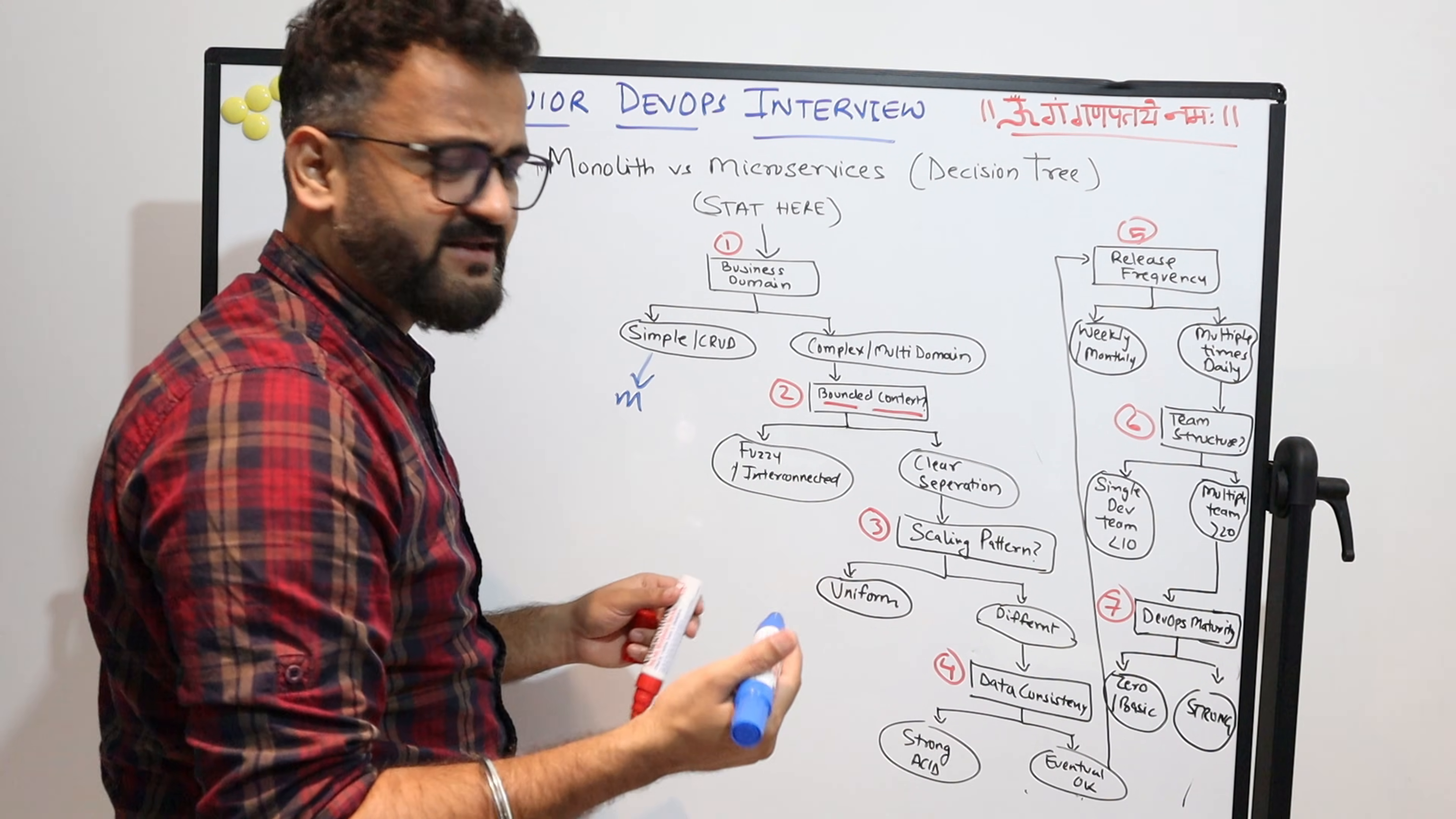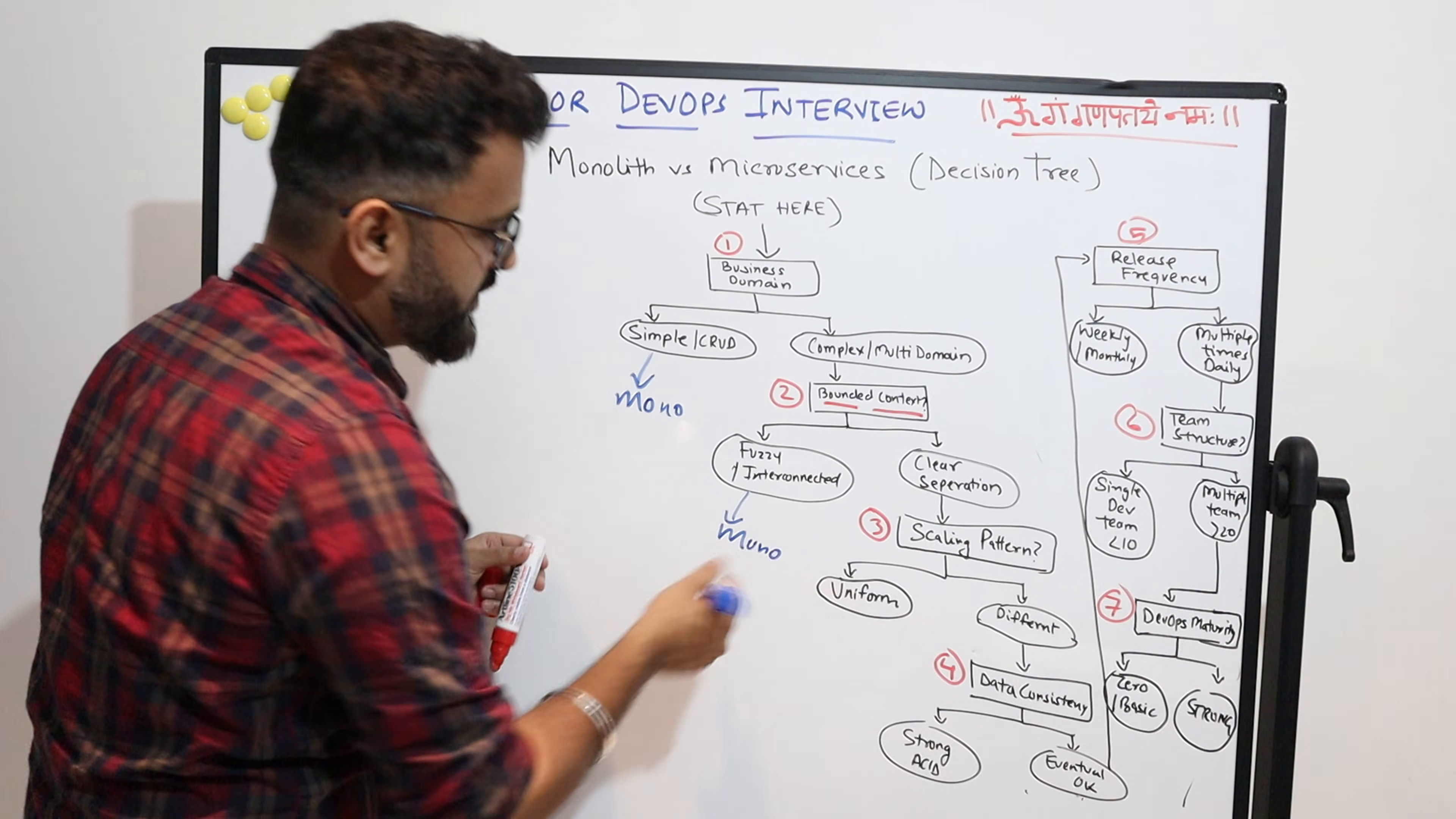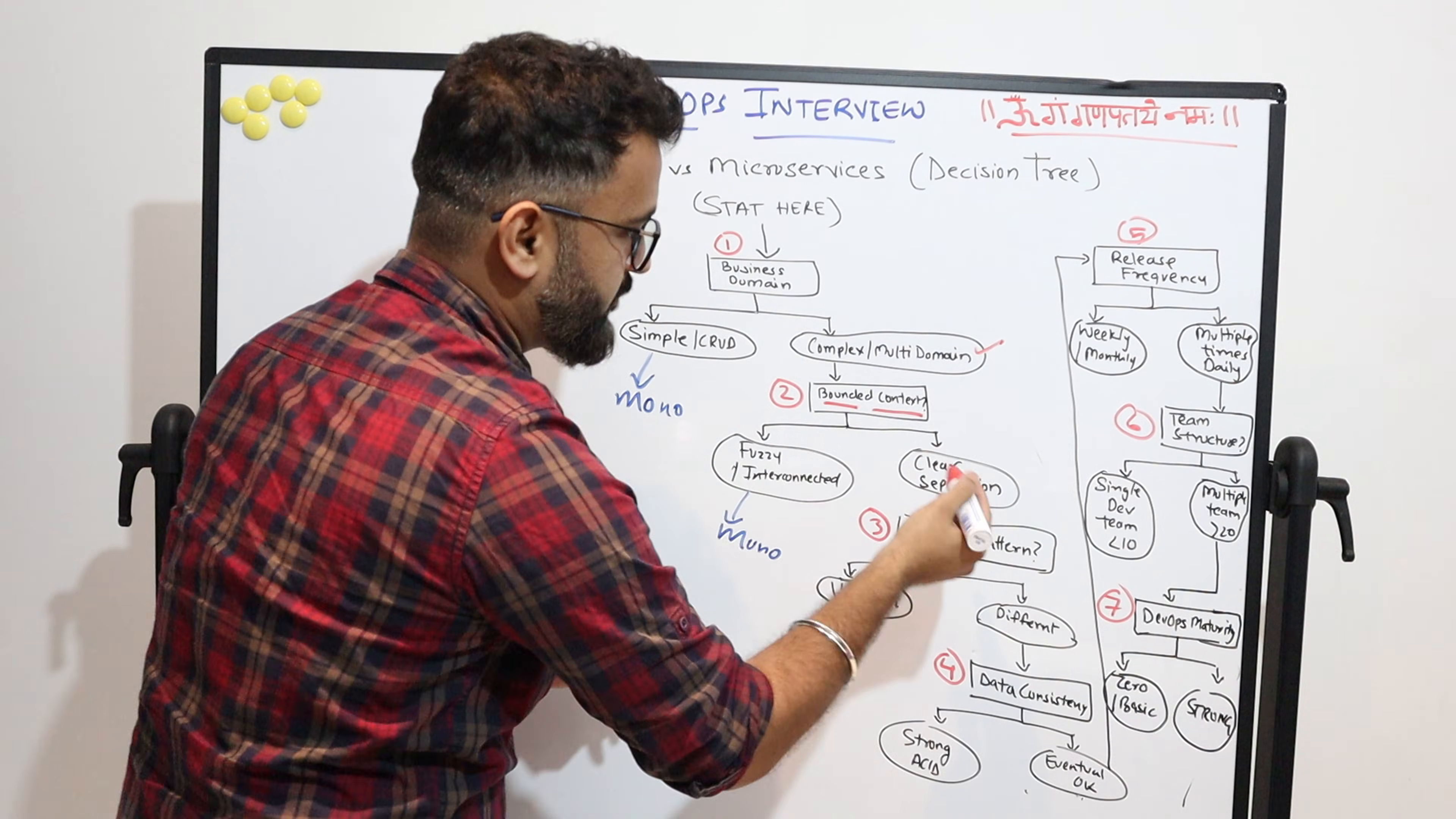If it is fuzzy and not very clear and very closely interconnected, then it will be very difficult for you to break it down. So again this will be moving towards or leaning towards monolith. But if we go down and there is a clear separation, that's a positive sign that we are more moving towards microservices.